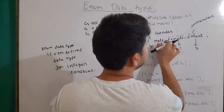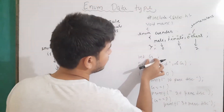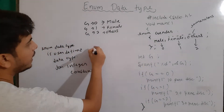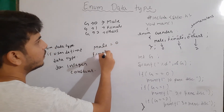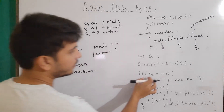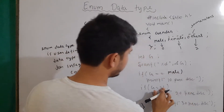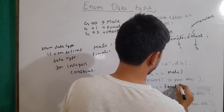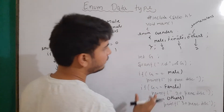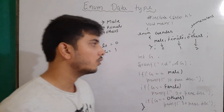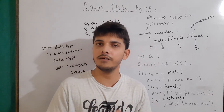Note that male, female, and others are just constants — they are not consuming any memory. They are not variables of type integer or character; they are just constants. Meaning that if I am writing male, it is similar to writing zero. If I am writing female, it is similar to writing one. So now, instead of writing if g equal equal zero, I'll write if g equal equal male. Similarly, I will write female and others here.